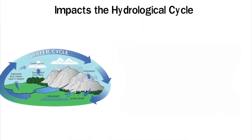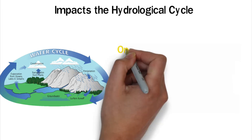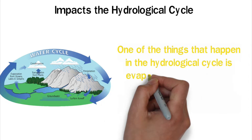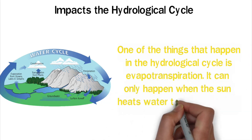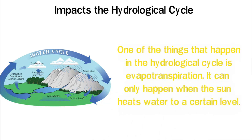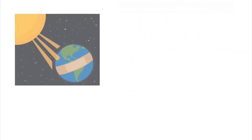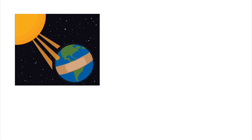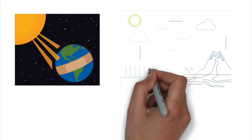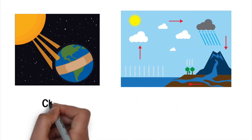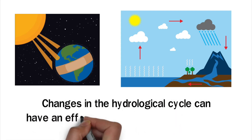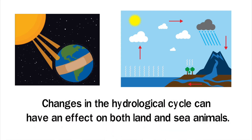Impacts on the hydrological cycle. The hydrological cycle is very important for the survival of the planet. It makes sure that all organisms in an ecosystem get enough water. One of the things that happen in the hydrological cycle is evapotranspiration, which can only happen when the sun heats water to a certain level. Global dimming will block the sun's energy, then slow down the rate at which water evaporates from the ground. This will disrupt the hydrological cycle, which will change the climate. Changes in the hydrological cycle can have an effect on both land and sea animals.